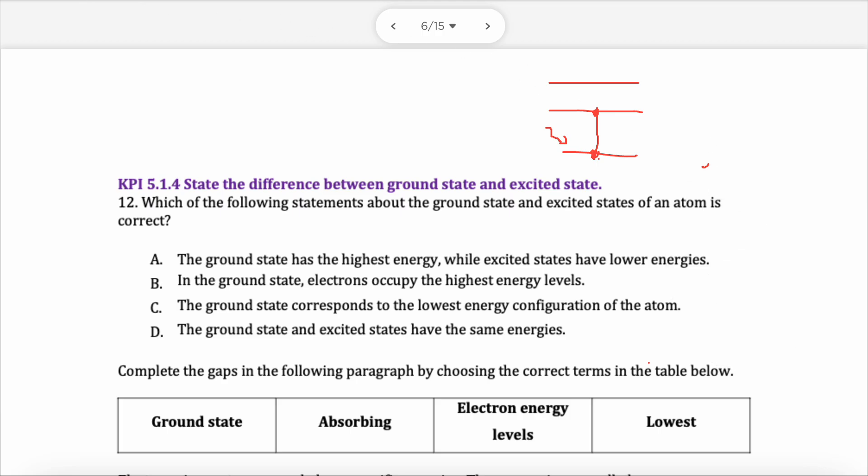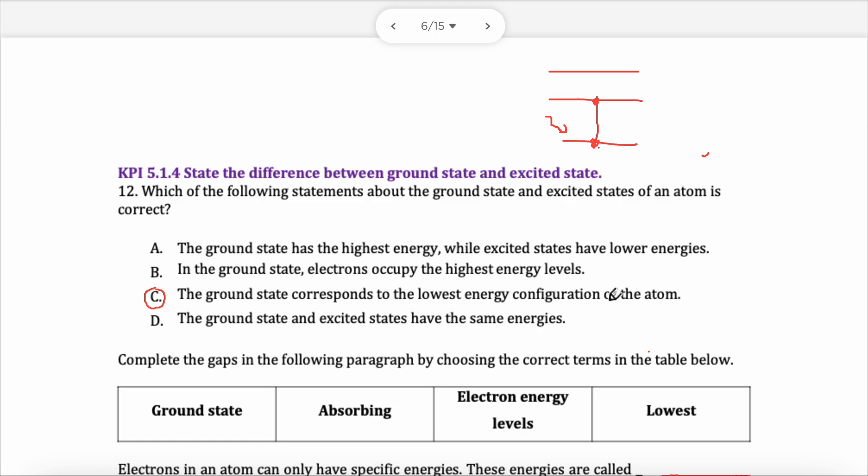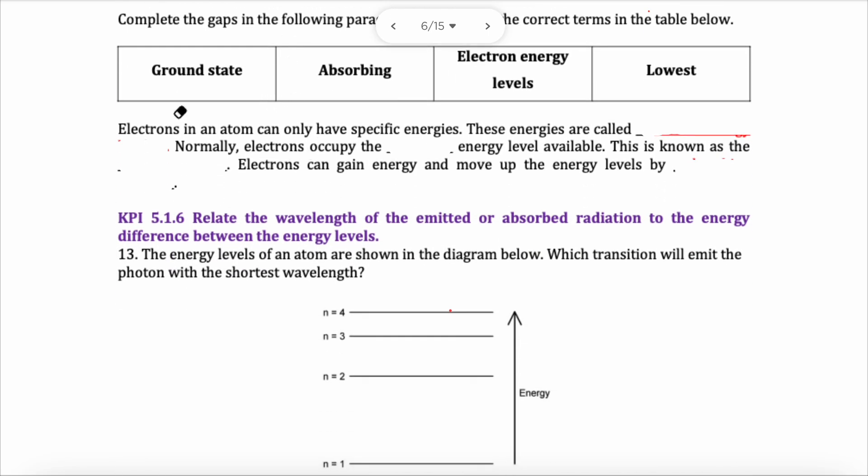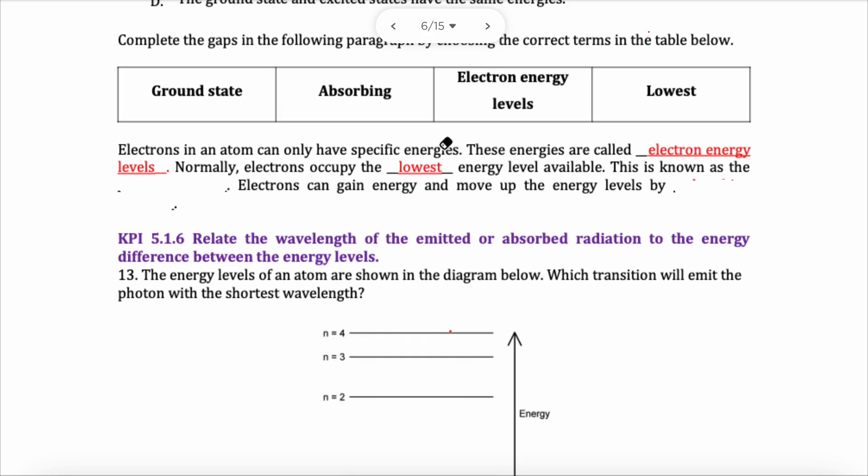But now that you have a quick overview of the basics, we know the ground state is the lowest energy. The exciting states have higher energies than them. So this is wrong, because it says the ground is the highest. Electrons occupy the highest levels. No, because it should be the lowest. Ground state and excite are the same. Of course not. So electrons in an atom can have specific energies. We call those specific energies electron energy levels. There it is. Electron energy levels. Normally they occupy the lowest state. That lowest level is known as the ground state. They want to be as low as possible, and that is called the ground. Anything above that would have been excited.